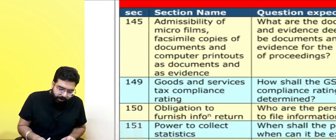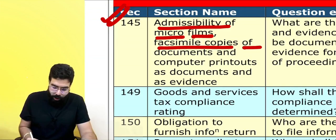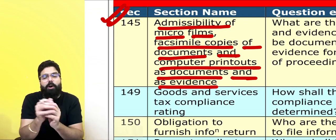Section number 145 talks about the admissibility of microfilms, facsimile copies, Xerox copies of documents, and computer printouts as documents and evidence. For example, if search and seizure happened at your place and they found some computer printout or some documents, can they be admitted as evidence? Yes.